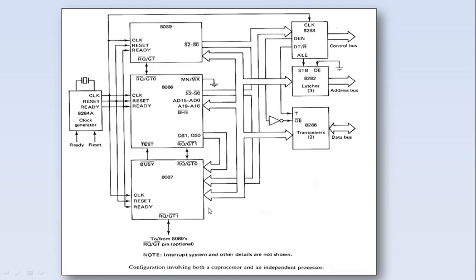The request and grant signals determine whether control is for the independent processor or for the 8087 numeric processor. They each have request and grant lines for taking control over the address and data bus. Different request and grant signals are used by the 8086 for communicating with the coprocessor and with the independent processor — it uses Request/Grant 1 for one and Request/Grant 0 for the other.